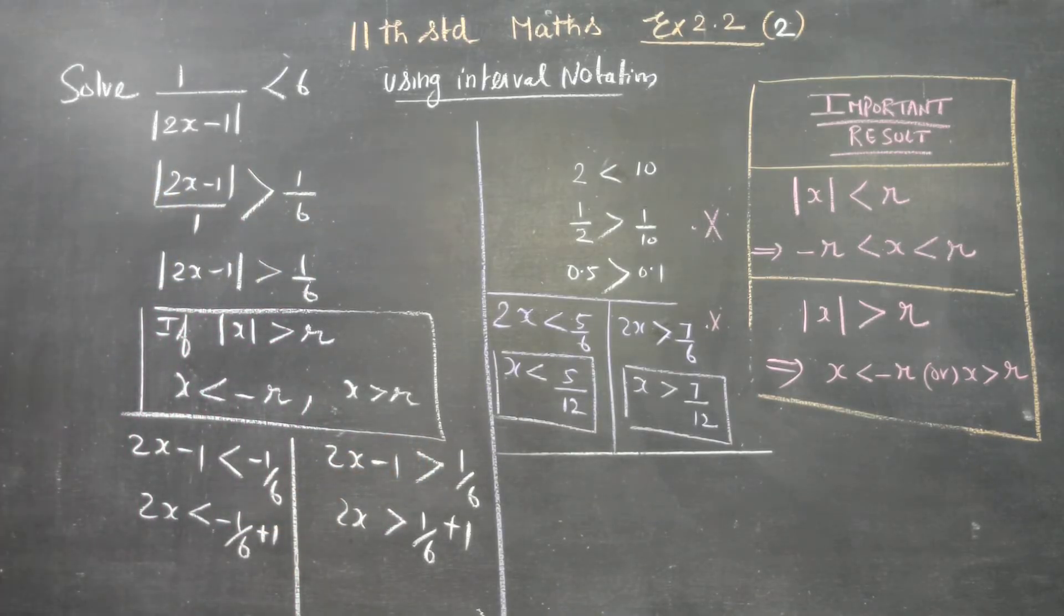The two results are x is less than 5 by 12, and x is greater than 7 by 12. These two answers we will combine to get the solution.